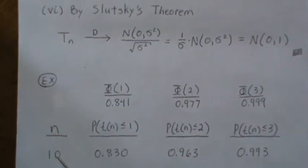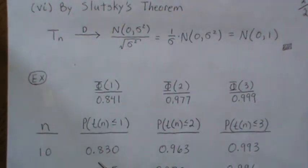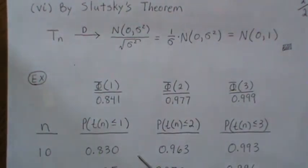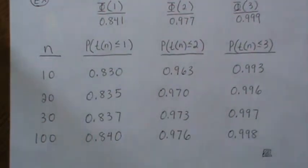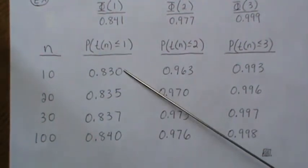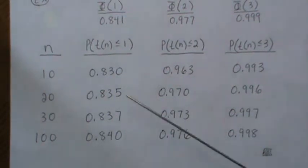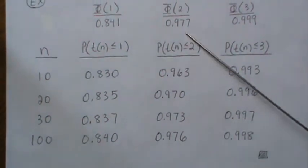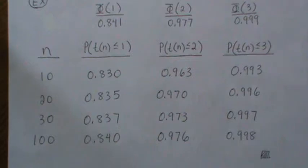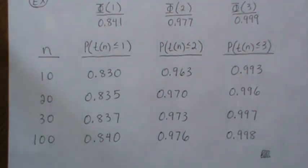In the t distribution with n degrees of freedom, probability of being less than one is 0.830, less than two is 0.963, less than three is 0.993. As we increase n, it gets closer and closer to 0.841, and in every case it gets closer and closer—it limits to the standard normal distribution. That's all I have for today. Hopefully you enjoyed it. If you did, please like and subscribe so you don't miss the next one. Thanks, bye.